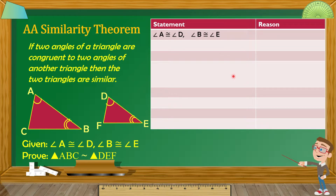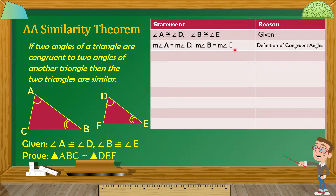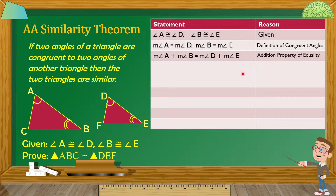Unang statement: angle A is congruent to angle D and angle B is congruent to angle E. Yung reason natin dyan is given. And then, sasabihin ko na measure angle A is equal to measure angle D, and measure angle B is equal to measure angle E. Yung reason natin is definition of congruent angles — kapag congruent angles, ibig sabihin nyan equal sila. Sasabihin ko dito na measure angle A plus measure angle B is equal to measure angle D plus measure angle E, by addition property of equality.